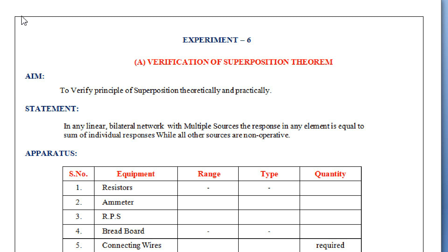Hello students, let us do experiment number 6, that is verification of superposition theorem. The aim of the experiment is to verify the principle of superposition theorem theoretically and practically. In any linear bilateral network with multiple sources, the response in any element is equal to the sum of individual responses while all other sources are non-operative.